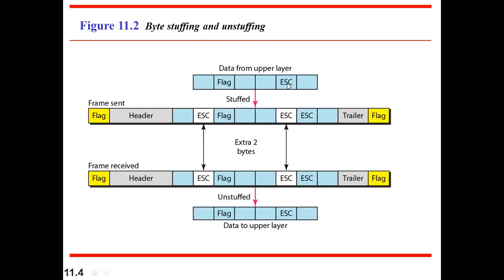Without byte stuffing, whenever the flag character appears in the data, the receiver would incorrectly treat it as the end of a frame. In byte stuffing, whenever the flag character and the data character are the same, an escape character is inserted. When the receiver identifies an escape, it removes it and understands the next character is still part of the frame — a continuation, not the end.